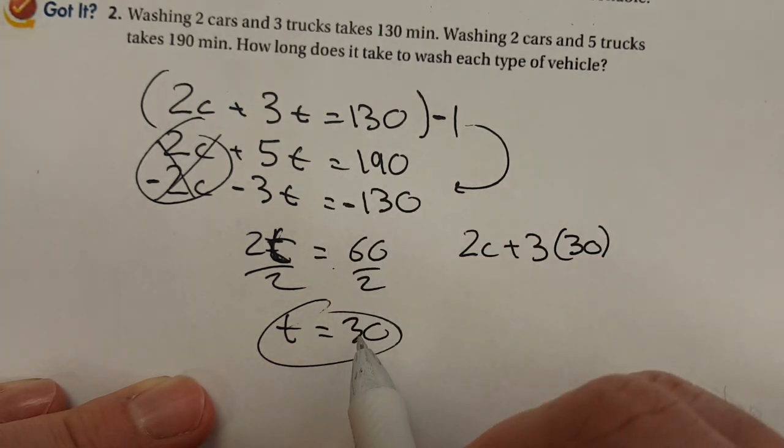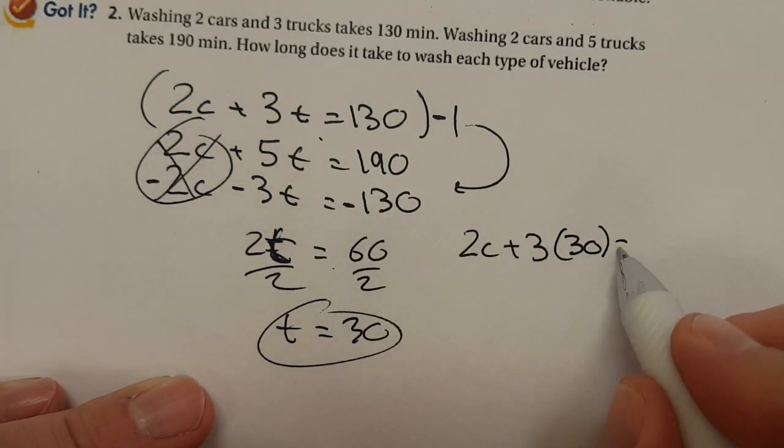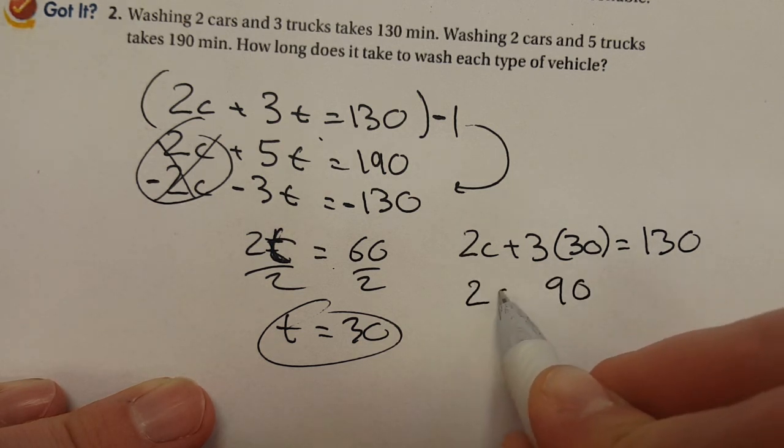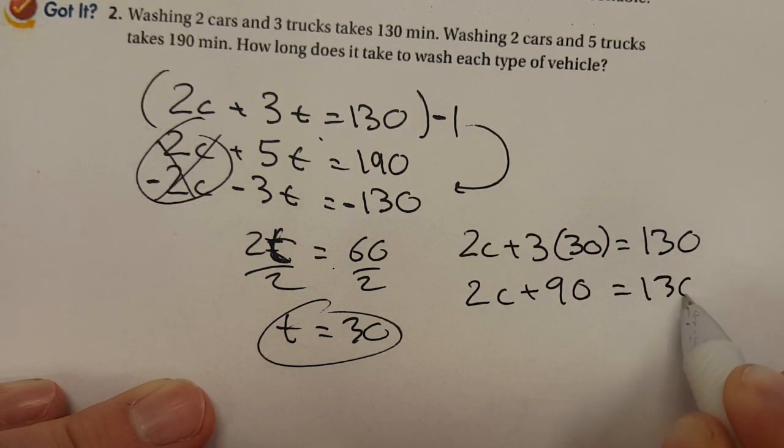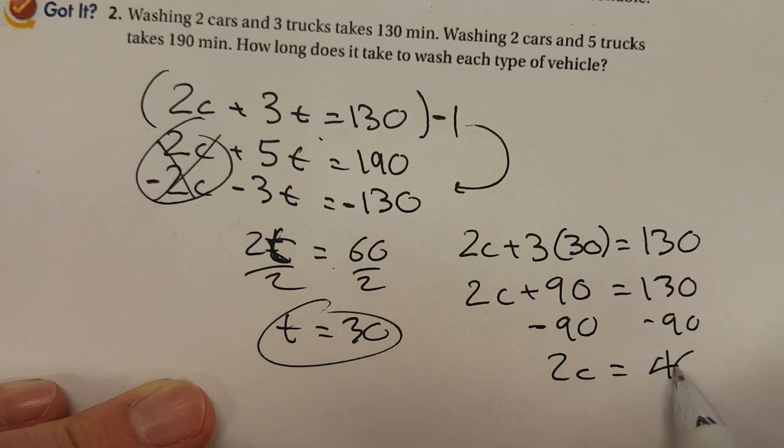Substituted already, okay? I know the trucks are gonna be 30 minutes. I'm gonna put 30 right in there. That's 90. So I got two cars and I already spent 90 minutes. It's gonna take me 130 total. Let's take away those 90 minutes I'm spending on the trucks. I got 40 minutes left over.